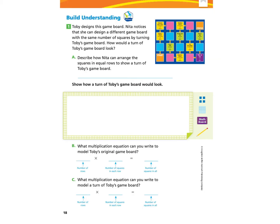Now let's turn to page 18, Build Understanding, question one. Toby designs this board game. Nita notices that she can design a different game board with the same number of squares by turning Toby's game board. How would a turn of Toby's game board look? Part A says: describe how Nita can arrange the squares in equal rows to show a turn of Toby's board game, and show how a turn of Toby's board game would look. First we need to understand what's going on with Toby's board game.